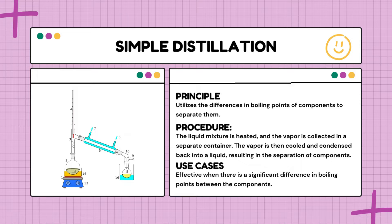The principle of simple distillation relies on the fact that different substances in a mixture have different boiling points. By exploiting these differences, you can separate the components effectively. To understand this clearly, imagine you have a mixture of liquids and they each have their own temperatures at which they like to become gas — simple distillation uses these preferences to separate them.